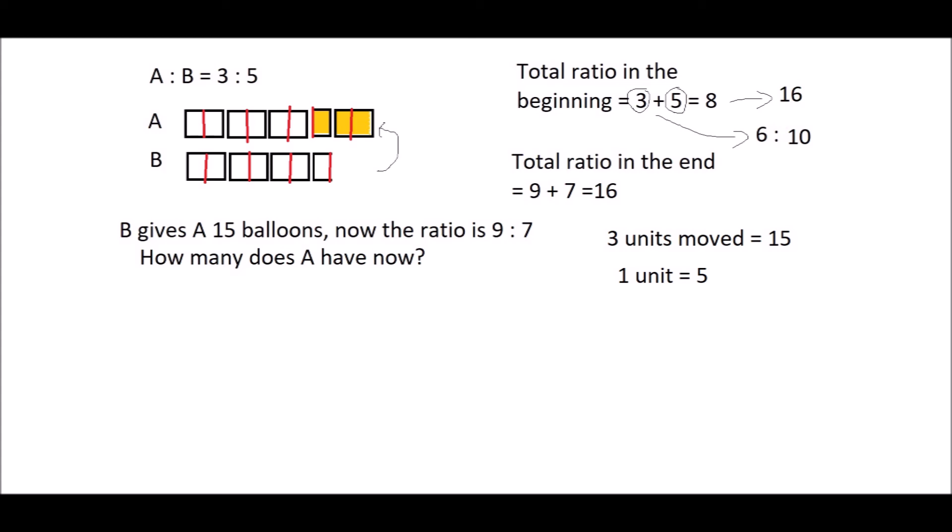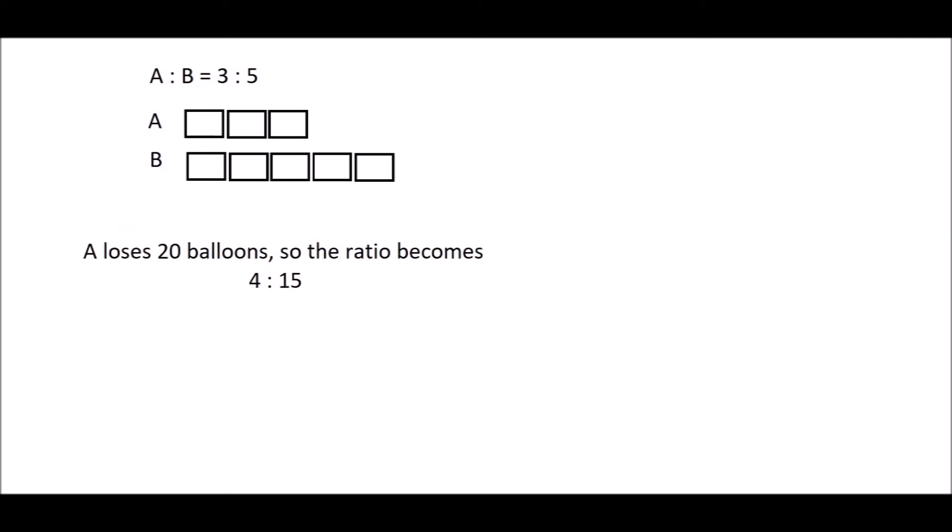Let's continue with the next question. If A loses 20 balloons, so the ratio becomes 4 to 15, how does it look like? Losing balloons means that we have less in A, but B doesn't get anything. So in this case, the one that doesn't change is B.